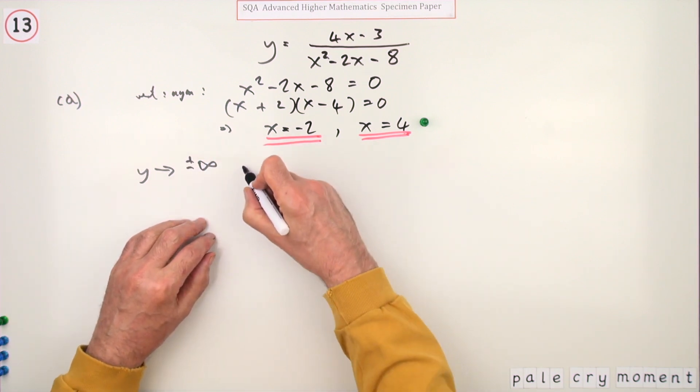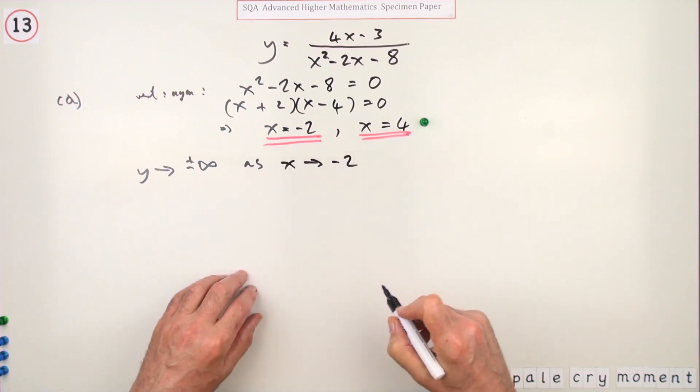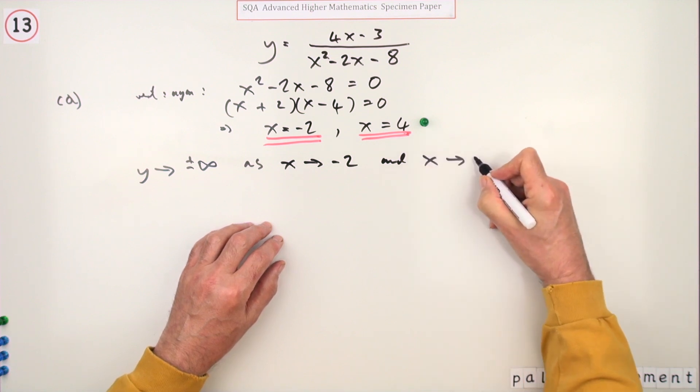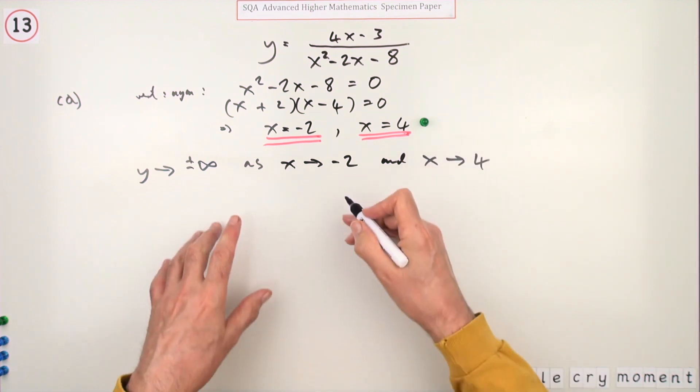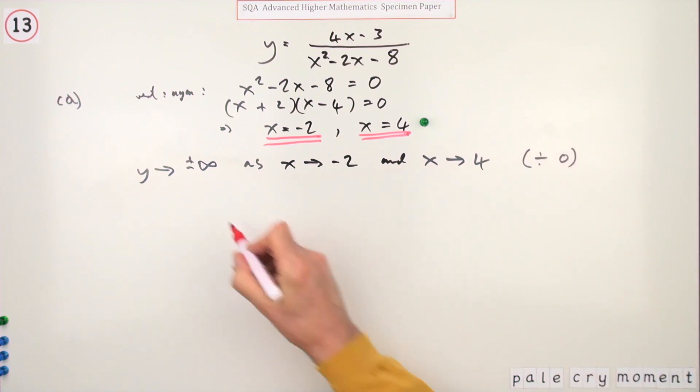Is that sufficient reason? I'll put that because it's divided by zero. So that's the reason: it's undefined, it heads to infinity as x goes towards either of those numbers.